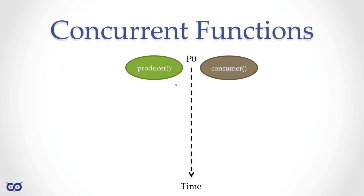P0 is what I'll call my processor. We had the same diagram before when we talked about sequential functions — the only thing added was P0 to mean a processor. For us, a processor is simply hardware, a piece of hardware that can execute code. We're not going to draw any distinction between hyper-threading cores, multiple cores within one physical CPU, or anything like that. Once we have hardware that can execute code, we'll call that a processor.